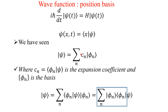The ket |ψ⟩ can be written as a summation over n: |ψ⟩ = Σ_n c_n |ψ_n⟩, using the superposition principle. The expansion coefficient c_n equals the inner product ⟨ψ_n|ψ⟩ — that is, how much of |ψ_n⟩ is projected over the total wave function |ψ⟩. This is the probability amplitude or expansion coefficient.